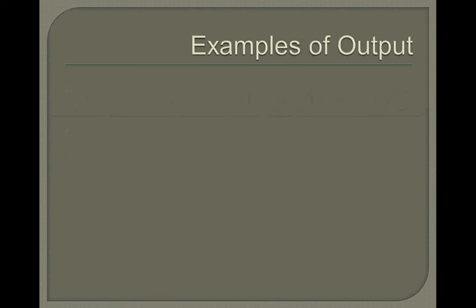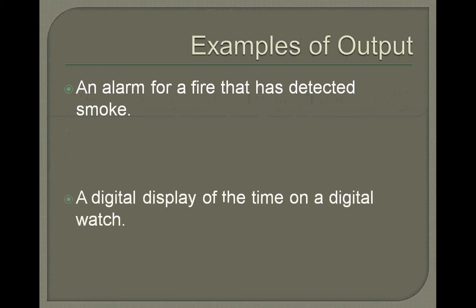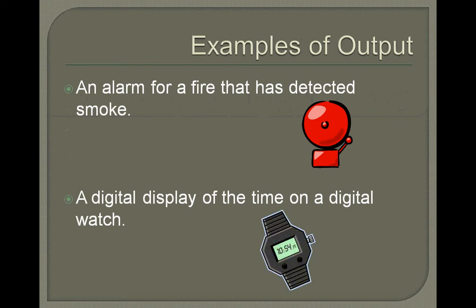Examples of output. An alarm for a fire that has detected smoke — when the alarm senses the smoke, the smoke being the input, the computer system in the alarm processes the fact that there's been smoke, and the output is the sounding of the bell. A digital display of the time on a digital watch: the input is the time, processing the time is the processing step, and the output is the actual digits on the watch as shown here.